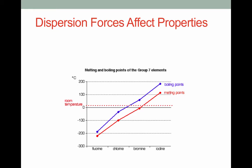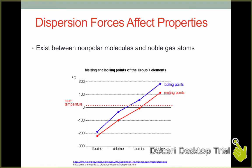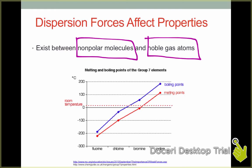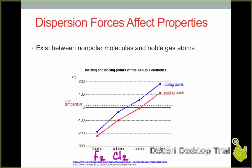Dispersion forces affect properties in a big way. It's important to note that dispersion forces occur between nonpolar molecules and between noble gas atoms. Here we have listed on this graph the nonpolar molecules of Group 7. Recall that the molecules in Group 7 are all diatomic: fluorine is F2, chlorine is Cl2, bromine is Br2, and iodine is I2. These atoms all exist in their molecular diatomic form.